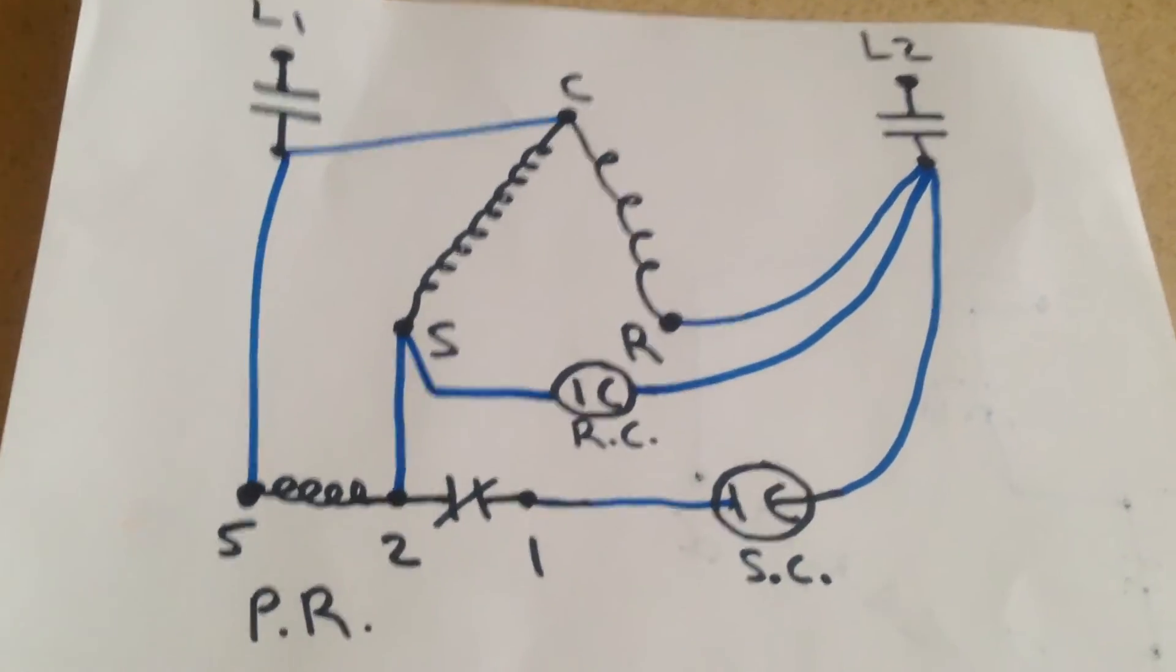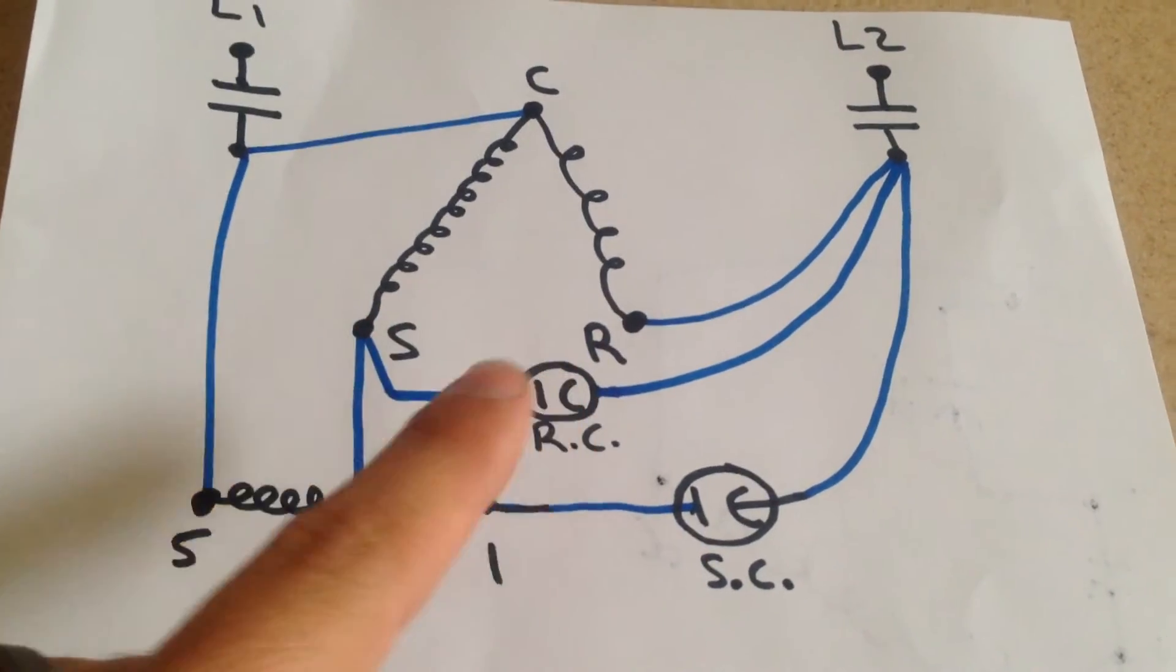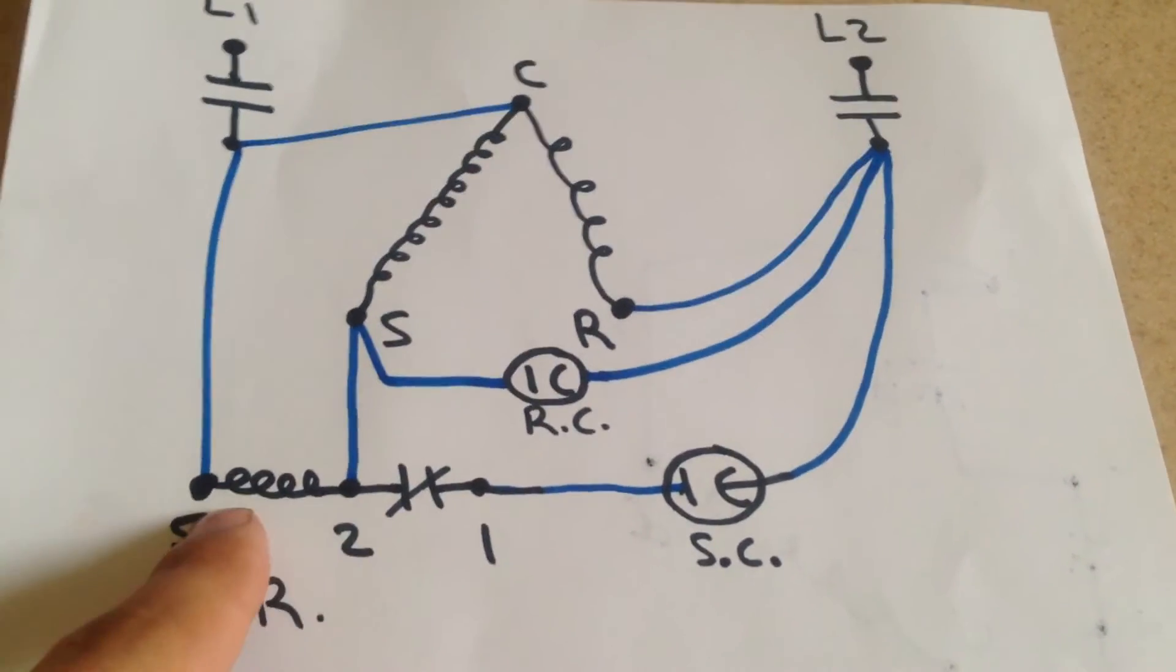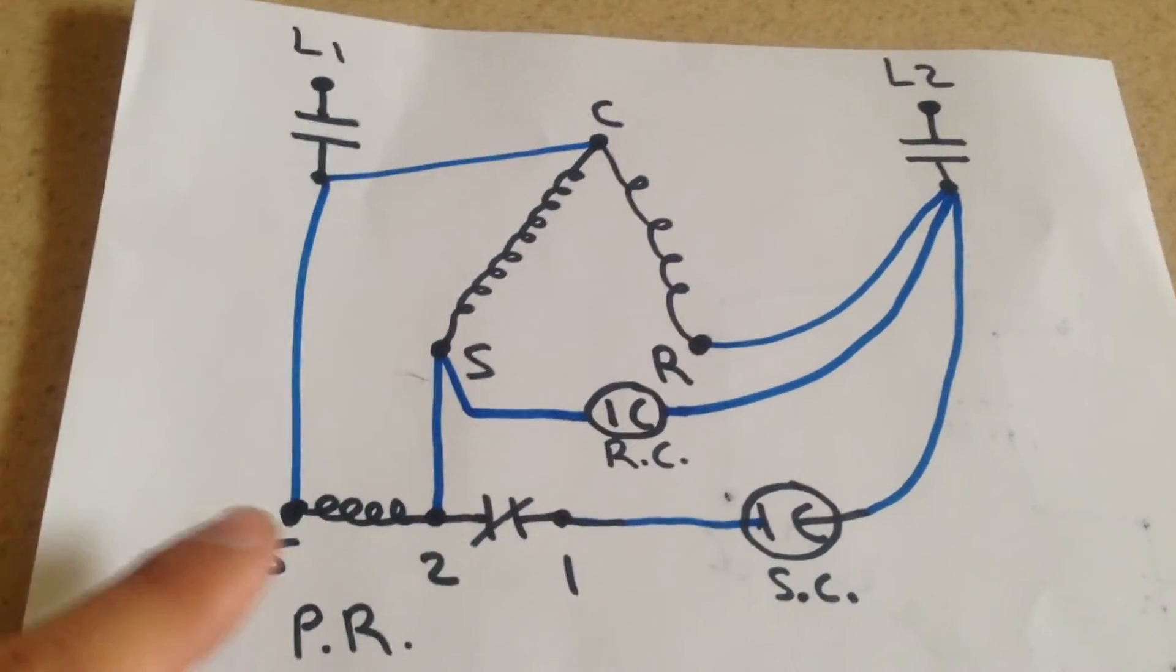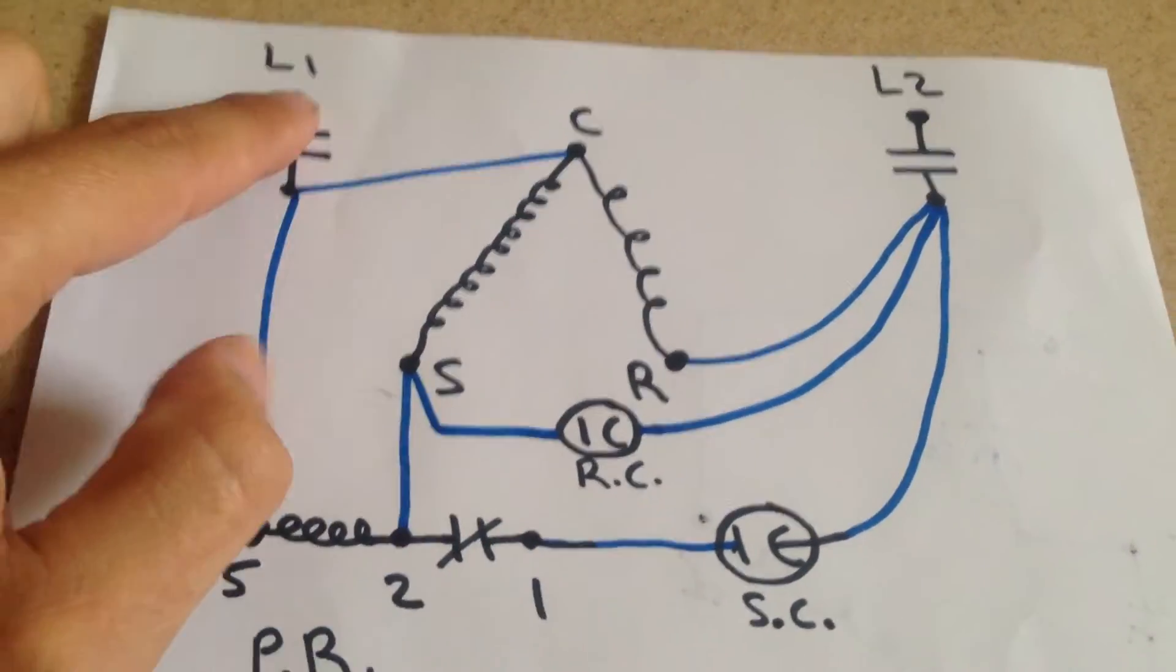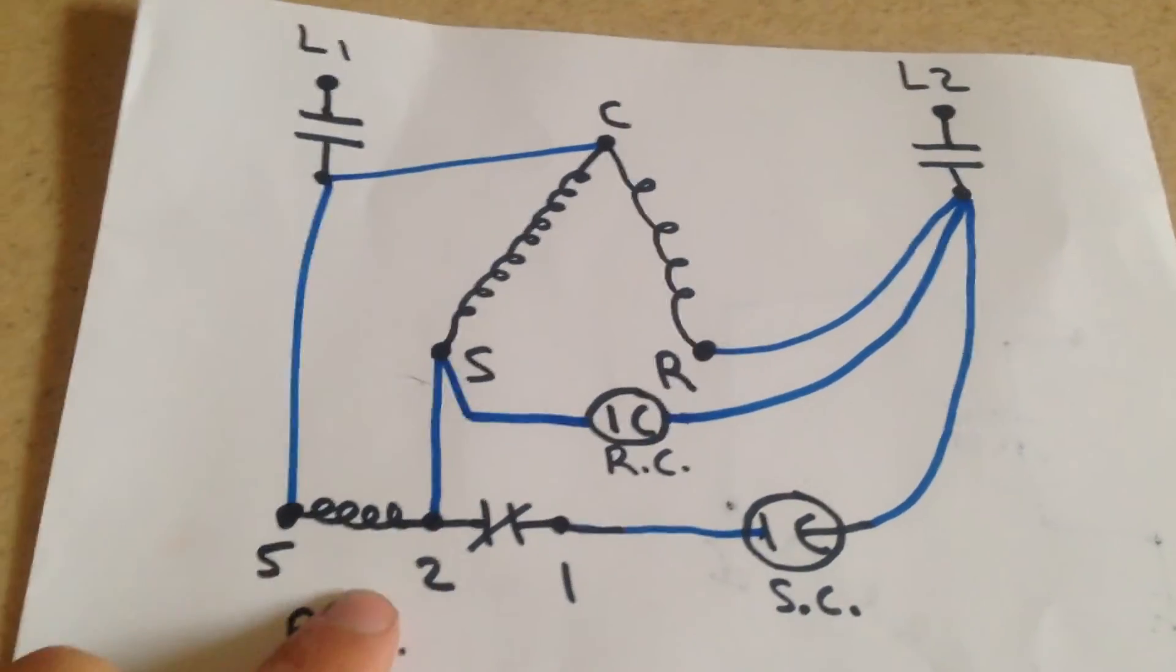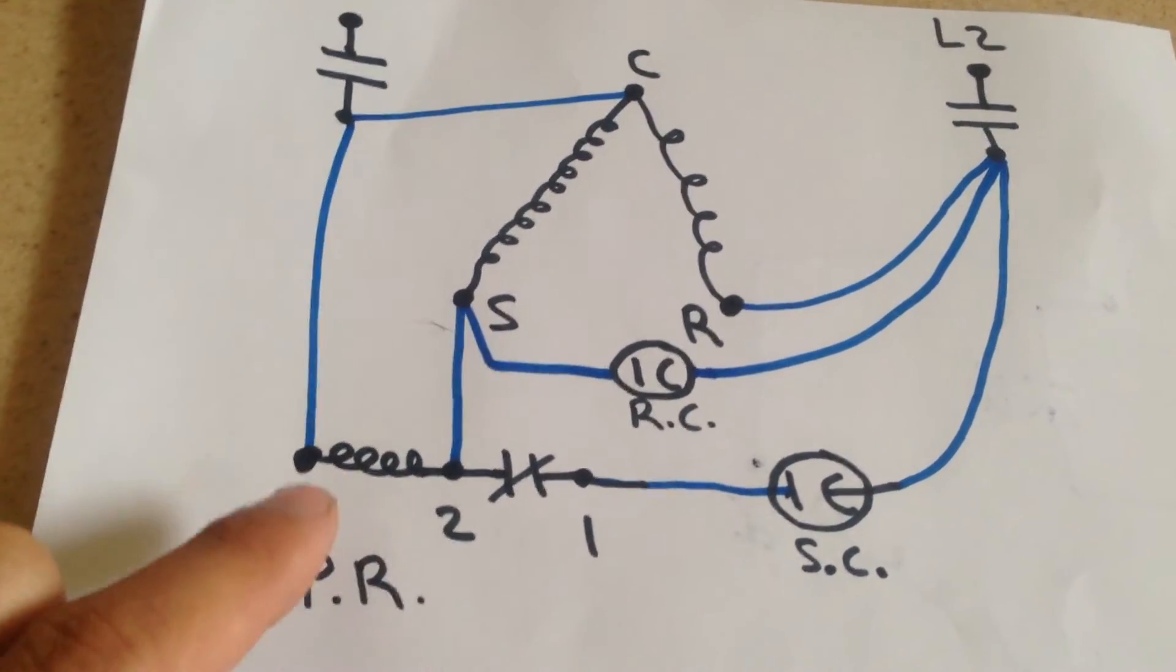So what that's going to do is assist our compressor on startup. And once it gets up to speed, this coil is going to sense a voltage across the start winding. And the reason it doesn't operate this contact initially when the contactor closes is because every coil or relay has a certain pull-in and drop-out voltage.